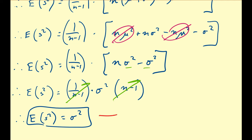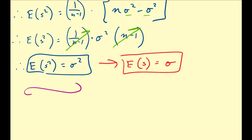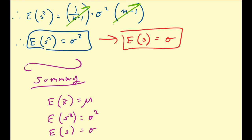From here, we also get the property that the expected value of the sample standard deviation S equals sigma. So in summary: the expected value of X-bar equals mu, the expected value of S-squared equals sigma-squared, and the expected value of S equals sigma. This is why we use these values — because they are unbiased estimators of the parameters.